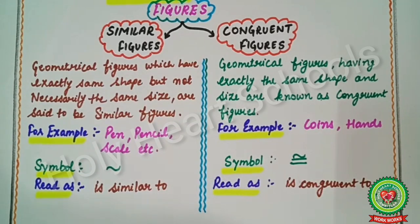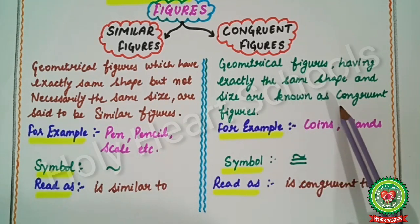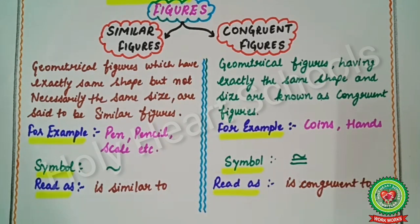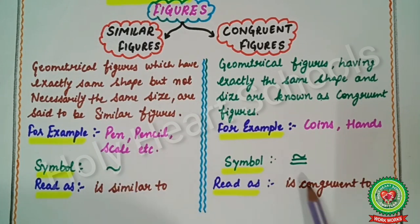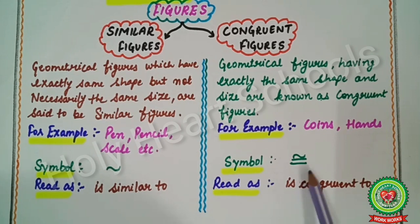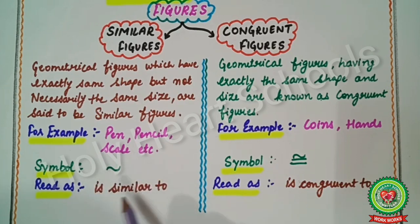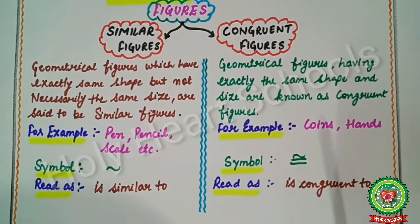Coins and hands are the easiest examples for understanding congruent figures. Now we will talk about the symbols: the tilde symbol (~) is used for similar figures, and the congruence symbol (≅) is used for congruent figures. We read the tilde as 'is similar to' and the congruence symbol as 'is congruent to'.